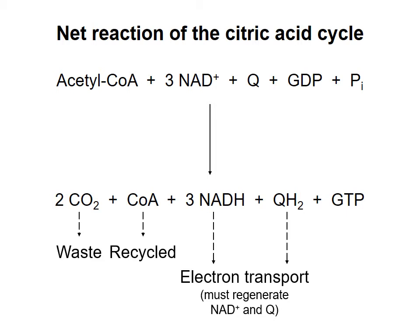It's necessary for these compounds to be able to give up their electrons to regenerate NAD+ and Q, so the citric acid cycle can continue. The ultimate electron acceptor is oxygen, so if oxygen is not present, then electrons will be stuck on the NADH and QH2, and the citric acid cycle will stop because there's no NAD+ or Q available to make it go. So the citric acid cycle is dependent on the presence of molecular oxygen, or O2, even though O2 is not directly involved in any reaction in the cycle.